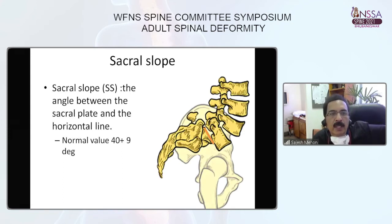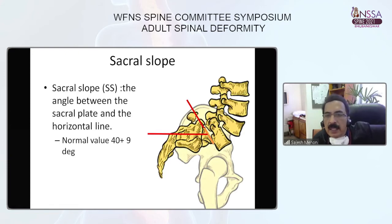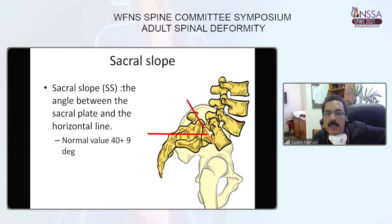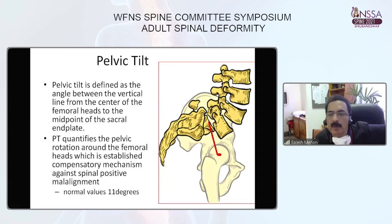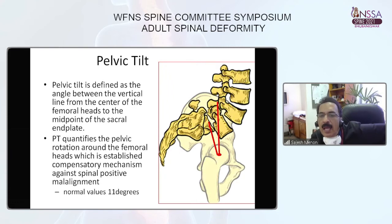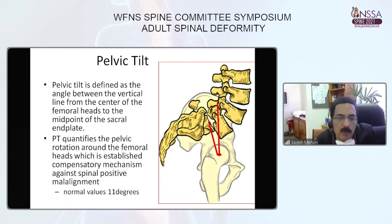Sacral slope is the angle subtended by a vertical line and the horizontal line drawn across the superior sacral endplate from its midpoint, with a normal value of 40 plus or minus 9 degrees. Pelvic tilt is defined as the angle between a line from the femoral head to the midpoint of the superior sacral endplate and a vertical line from the femoral head. Pelvic tilt qualifies the pelvic rotation around the femoral head, which is a compensatory mechanism against positive sagittal alignment, with a normal value of 11 degrees.